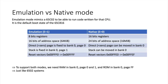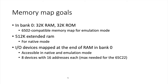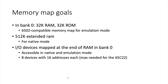All that means that when we design our memory we have to take these restrictions into account. To support both modes we need RAM in bank zero pages zero and one for the direct page and stack in emulation mode, and ROM in bank zero page FF to support the reset vectors. As I said in the introduction video, I want to have 32K RAM and 32K ROM in bank zero — the 6502 compatible memory map. I also want to add 512K of extended RAM as banked memory used in native mode, and I/O devices mapped at the end of RAM in bank zero, with 8 devices with 16 addresses each.